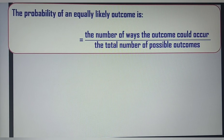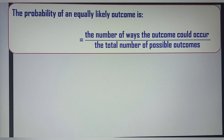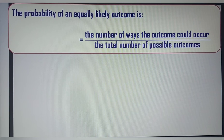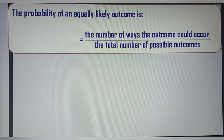In this lesson, we are going to learn about probability of an equally likely outcome, and this is a continuation of the previous lesson. The probability of an equally likely outcome equals the number of ways the outcome could occur divided by the total number of possible outcomes.